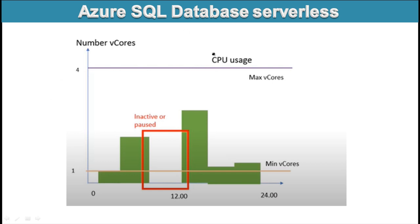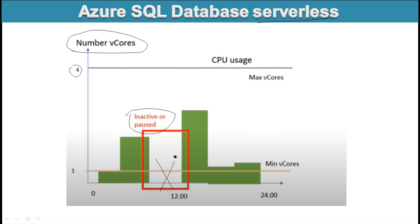Now let's understand the serverless process. In this diagram, the maximum number of vCores is 4, and we never reach that maximum. During certain inactive time periods the database is paused, so charges are not applicable during that time. Once usage resumes, charges begin again from that point. Between active periods, there is no charge.